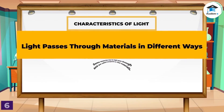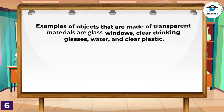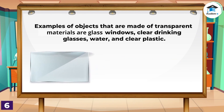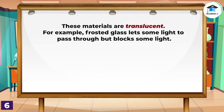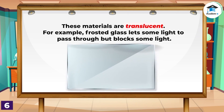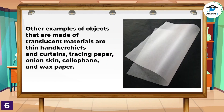Light passes through materials in different ways. Some materials that let light pass through are called transparent or clear materials. Common examples of objects made of transparent materials are glass windows, clear drinking glasses, water, and clear plastic. Some materials allow only some amount of light to pass through — these materials are translucent. For example, frosted glass lets some light pass through but blocks some. Other examples of translucent materials are thin handkerchiefs and curtains, tracing paper, onion skin, cellophane, and wax paper.